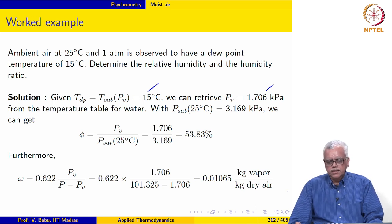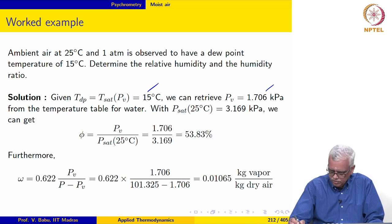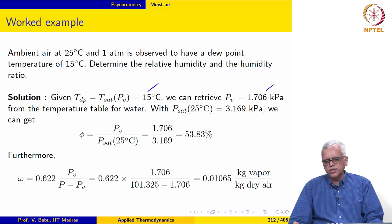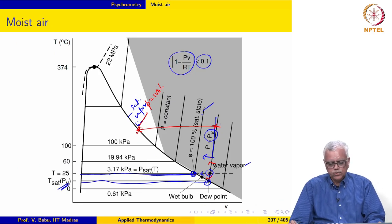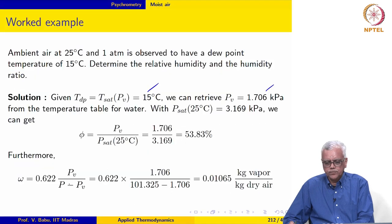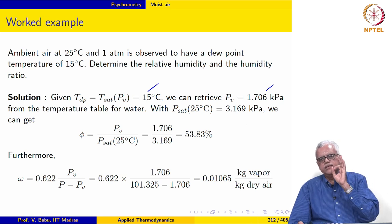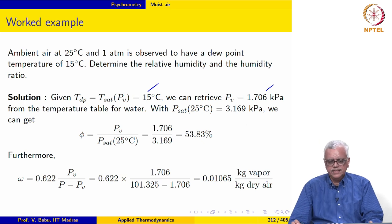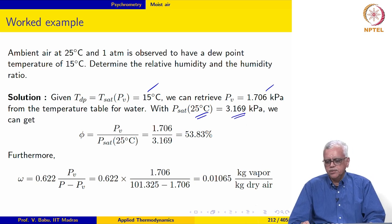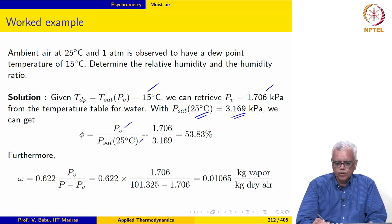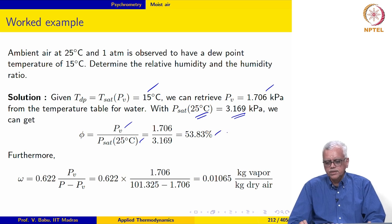This is the saturation pressure corresponding to 15 degree Celsius. From the table, T_sat of PV equals 15 degree Celsius, so we look at the pressure for which the saturation temperature is 15 degree Celsius. P_sat of 25 degree Celsius can be retrieved from the table as 3.169 kilopascal. We can then evaluate relative humidity as PV over P_sat of 25 degree Celsius, and this comes out to be 53.83 percent.